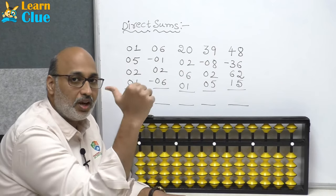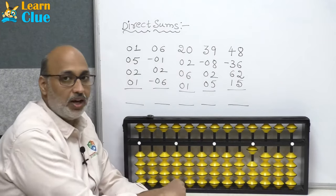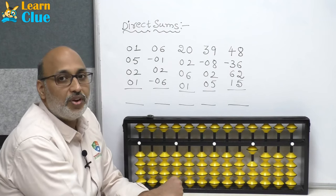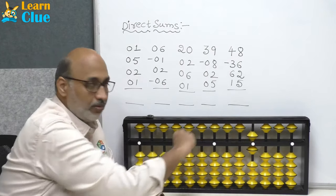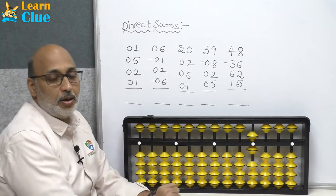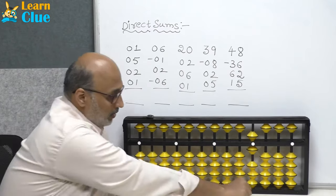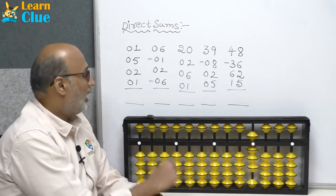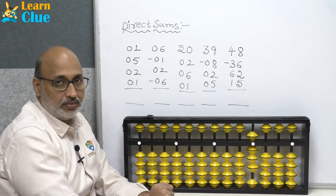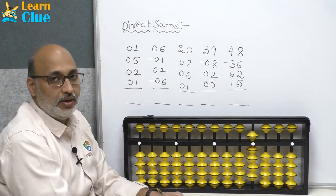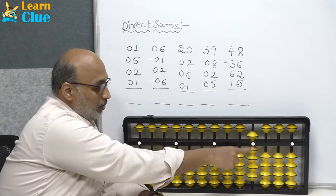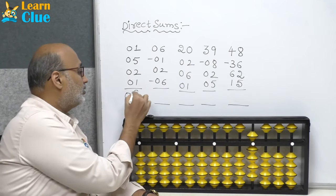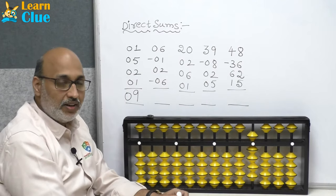We will see the first problem. What is the first number? 1 — that's in earth beads, so use your thumb finger. Plus 1, then plus 5 — heaven bead, use your index finger. Plus 5 again. Plus 2 — beads are available in ones place, directly take 2. Plus 1 — add one more bead. Count the total: 5 plus 1 is 6, 7, 8, and 9. The answer is 9.